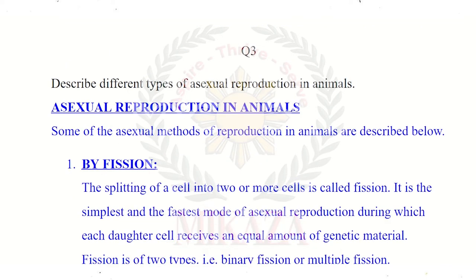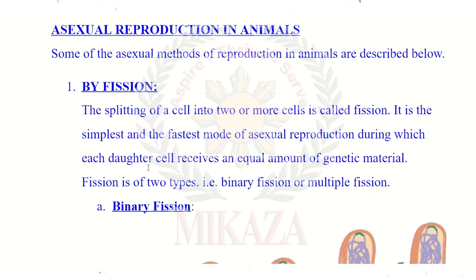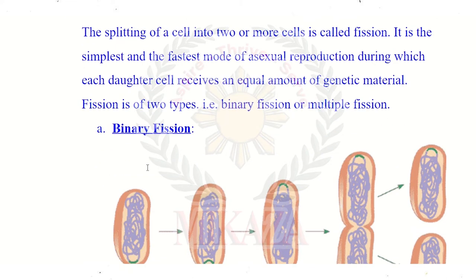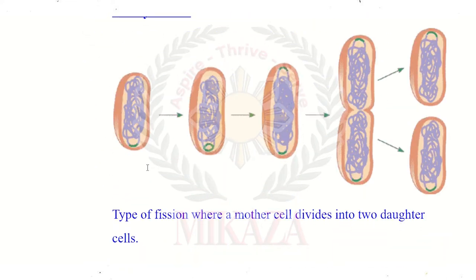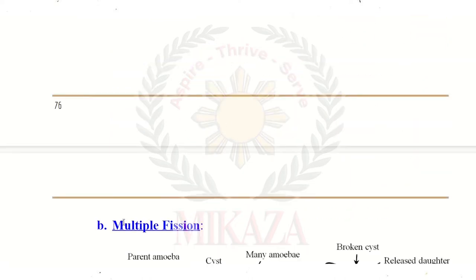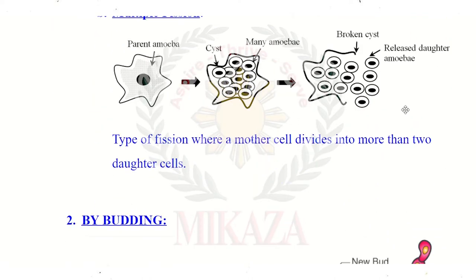Question number 3: different types of asexual reproduction in animals. First, fission: binary fission, where the cell splits into two cells, and multiple fission, where the cell splits into more than two cells.